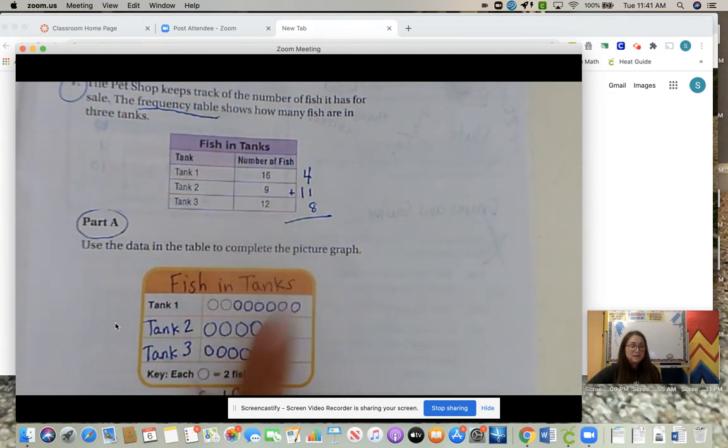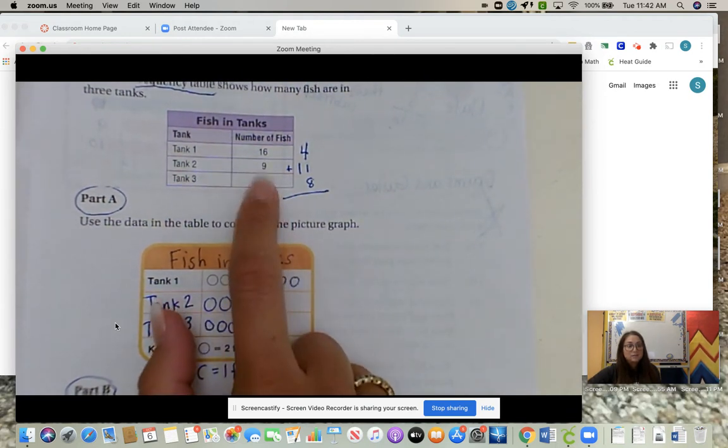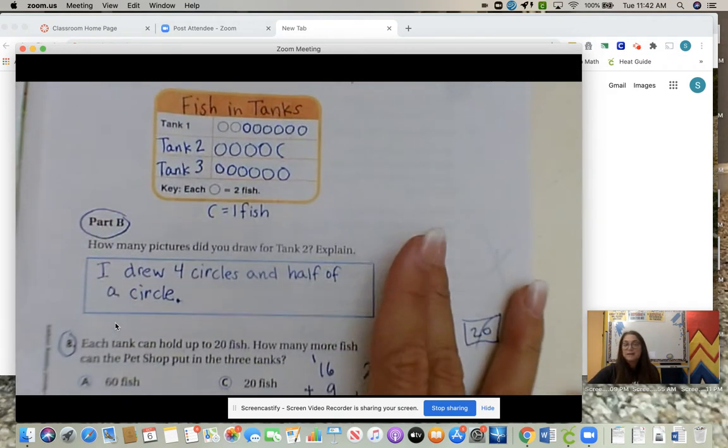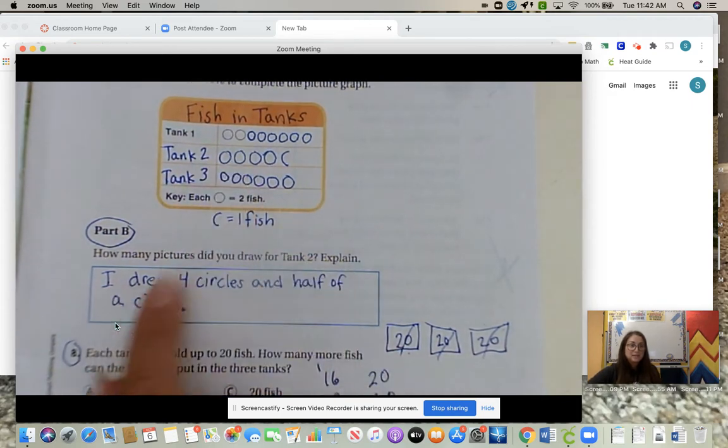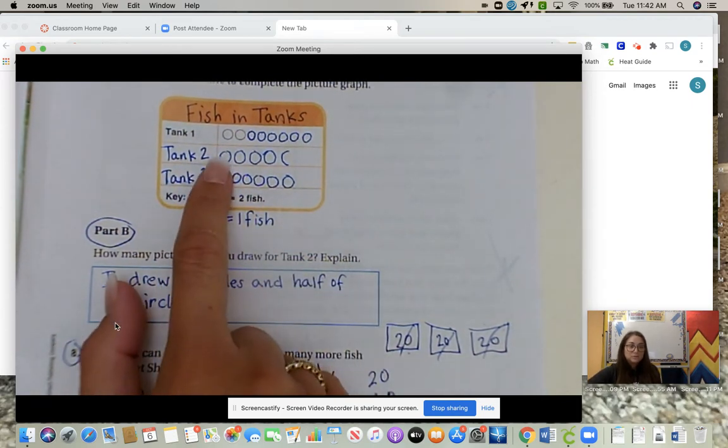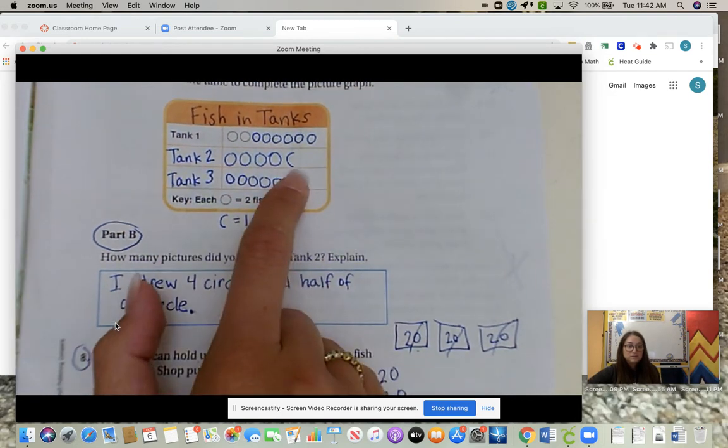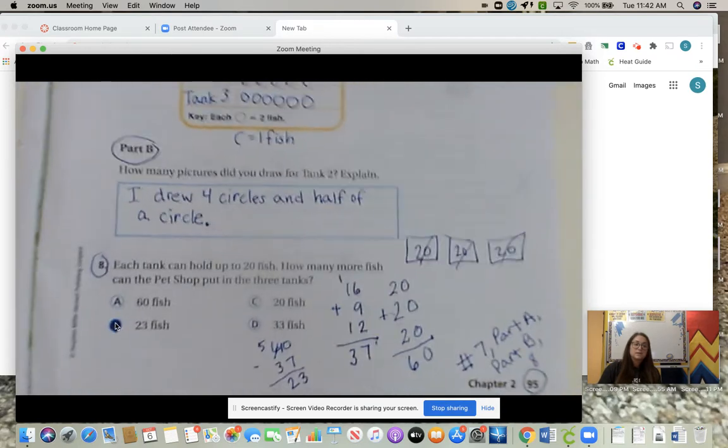Next is nine. Two, four, six, eight. And then half of a circle, one. Eight plus one is nine. Tank three. Two, four, six, eight, ten, twelve. Tank three has 12 fish. Part B. How many pictures did you draw for tank two? Explain. I drew four circles. One, two, three, four. And half of a circle. There's half of a circle.